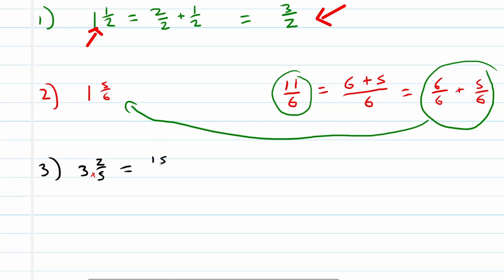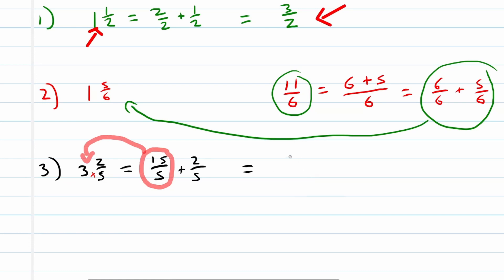So this is 15 over 5 plus 2 over 5. Remember, 15 over 5 has to represent the same value as the 3 — the whole number in front of the mixed number. Now we have the same denominators, so we can add the numerators together, which gives 17 over 5. This is the improper fraction representation of the mixed number 3 and 2 over 5.